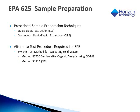EPA Method 625 is a prescriptive method, meaning that any variance from the method, such as using an alternative sample preparation technique like SPE, requires the laboratory to apply to the EPA for an alternate test procedure (ATP). EPA Method 8270D for semi-volatile organic analysis by GC-MS using EPA SPE method 3535A is often used for ATP purposes. Both methods fall under the solid waste SW-846 umbrella for analytical methods.